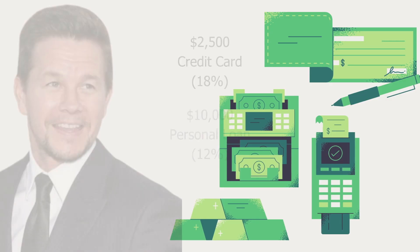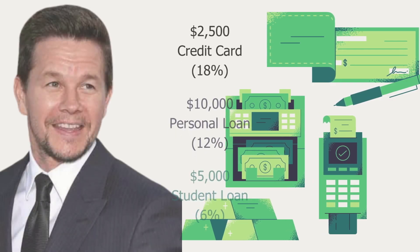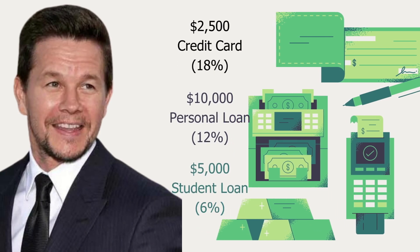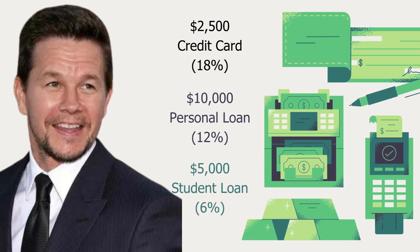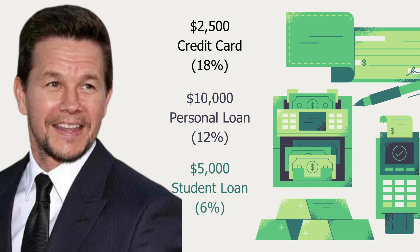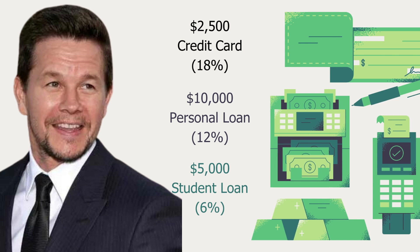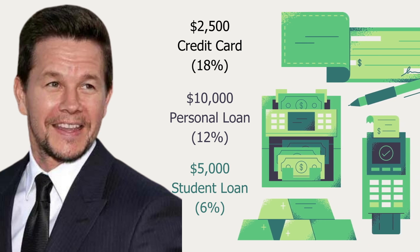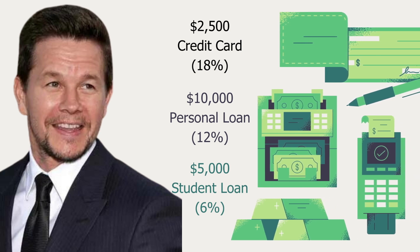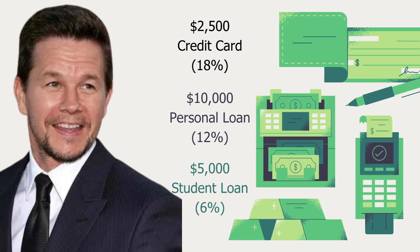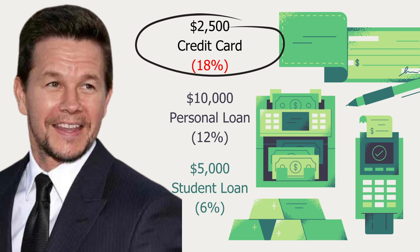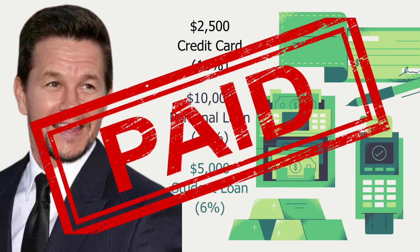Let's take a look at an example. Mark has three debts: $2,500 on a credit card with an interest rate of 18%, $10,000 on a personal loan with an interest rate of 12%, and $5,000 on a student loan with an interest rate of 6%. Instead of starting with the smallest debt like the debt snowball method, Mark chooses the debt avalanche approach. He allocates any extra funds to pay off the credit card first, as it has the highest interest rate. Within a few months, he clears the credit card debt, then redirects the extra funds to the personal loan, followed by the student loan.